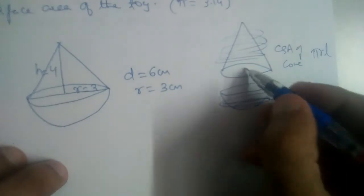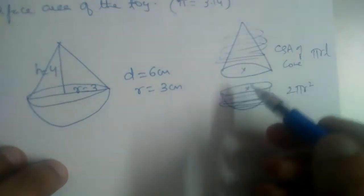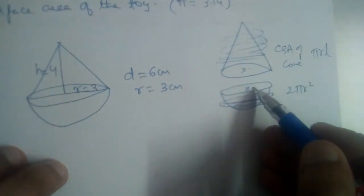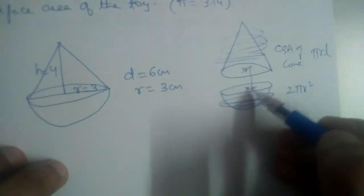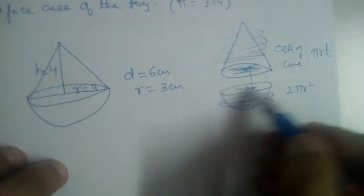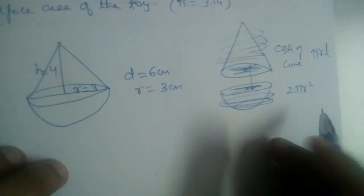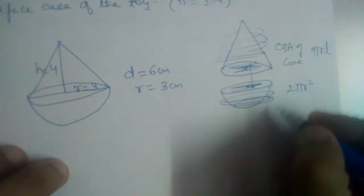And CSA of hemisphere which is equal to 2πr², and we should add this to it. Why are we not finding this base and this top? Because when we are attaching these two solids, these two surfaces will not exist anymore.